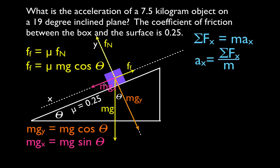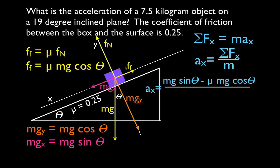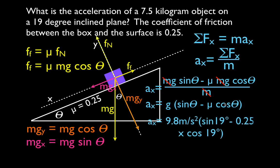Now we can plug values in. The acceleration equals mg sine theta minus mu mg cosine theta, all divided by mass. The mass appears in every term and cancels out, and we can factor out g. So the acceleration equals g times (sine theta minus mu times cosine theta). The mass does not affect the acceleration. Plugging in: 9.8 times (sine 19° minus 0.25 times cosine 19°), giving an acceleration of 0.87 meters per second squared.